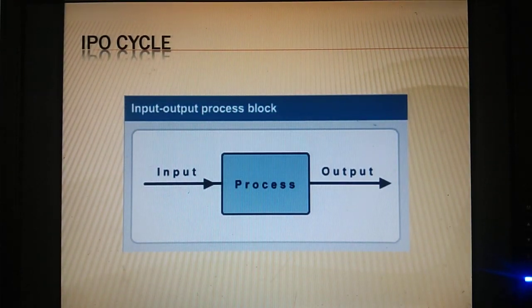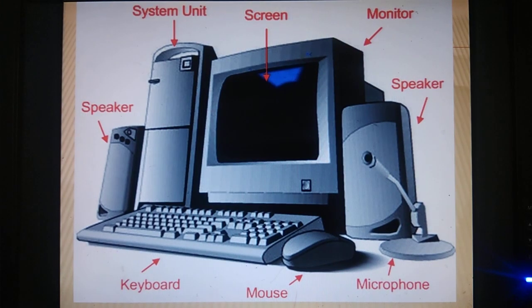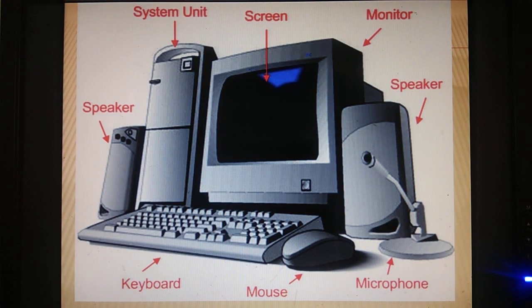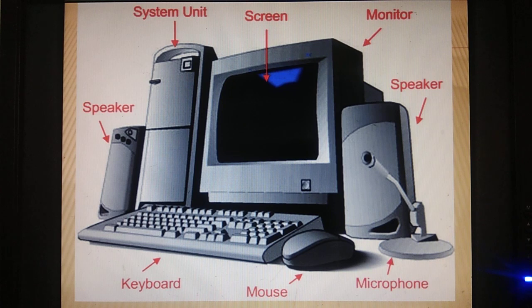In this IPO cycle, we have input, process, and output. Now we will go deeper. First of all, you will see the screen, which is the monitor — TFT, LED — which is the visual display unit. Then we know the system unit. We know the speakers, which are output devices, the microphone which we can use to record, the mouse as a pointing device which we can select with, and the keyboard which we can use for typing.